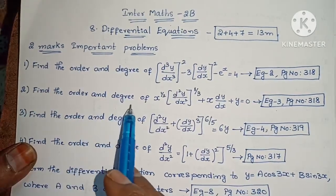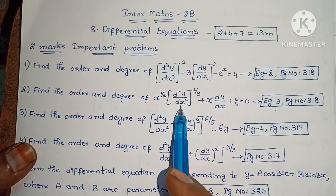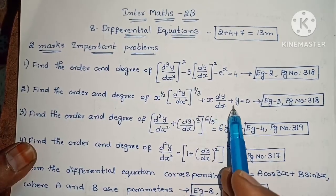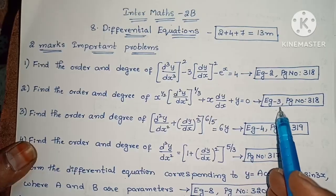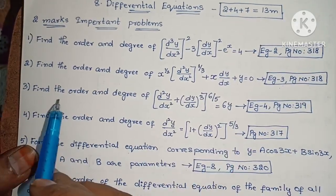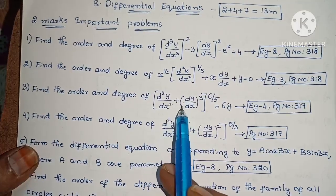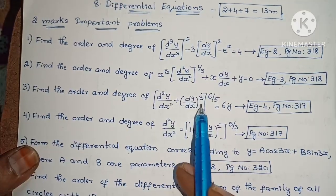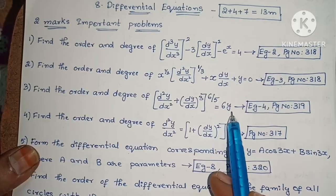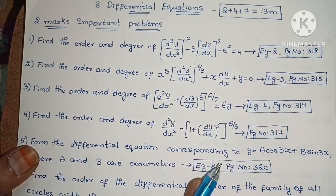Next, find the order and degree of x^(1/2) · (d²y/dx²)^(1/3) plus x·(dy/dx) plus y equals 0. Example 3, page number 318. Next, find the order and degree of (d²y/dx² + (dy/dx)³)^(6/5) equals 6y. Example 4, page number 319.